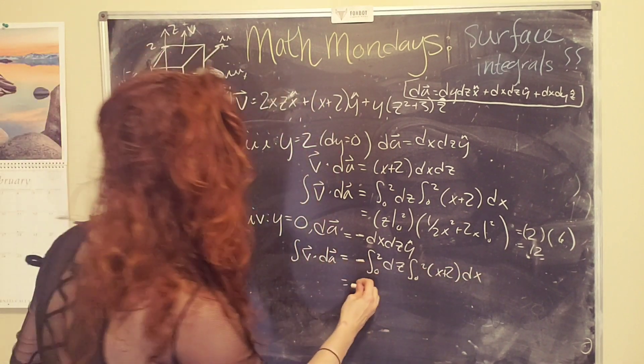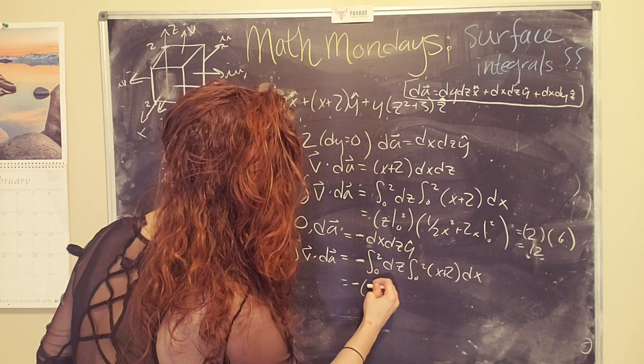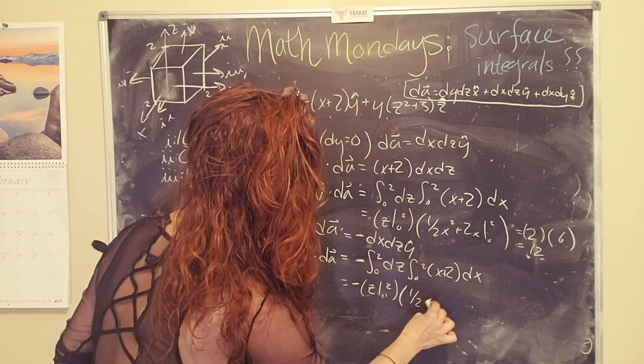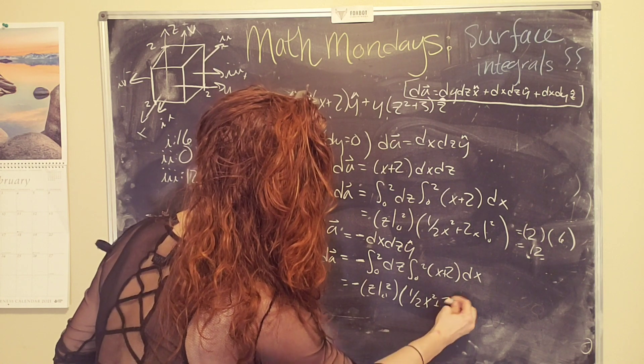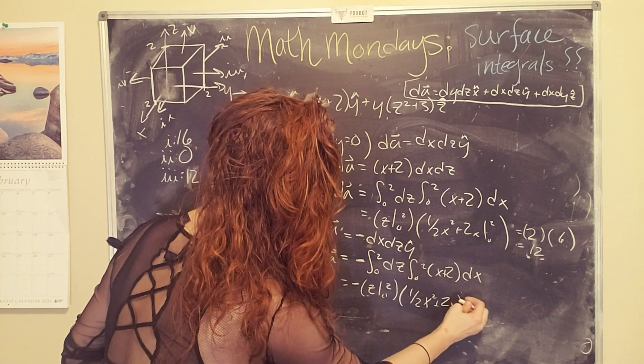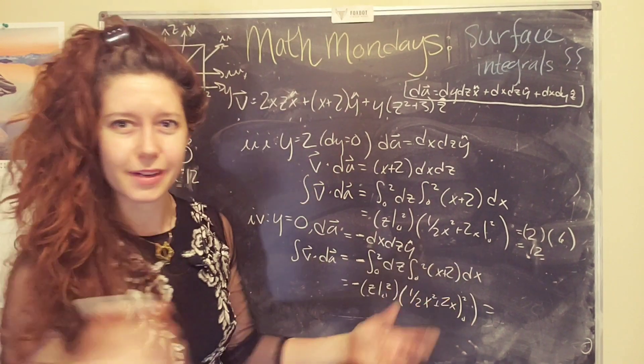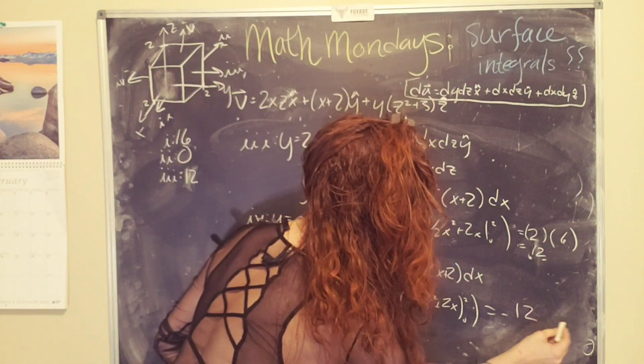The good news is that again, we already pretty much did this. So negative z from zero to two times one half x squared plus 2x, oops, zero to two. And so this is just going to give me a negative twelve. Okay.